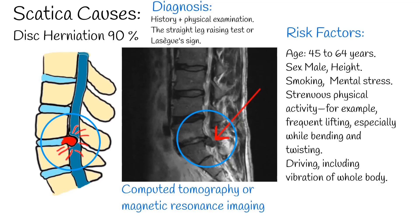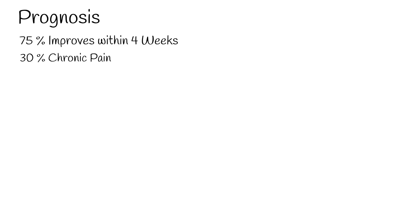In general, the prognosis of sciatica is favorable, and most pain and related disability resolves within 2 weeks. Around 75% of patients report improvement after 4 weeks. However, for approximately 30% of patients, pain continues for 1 year or longer.